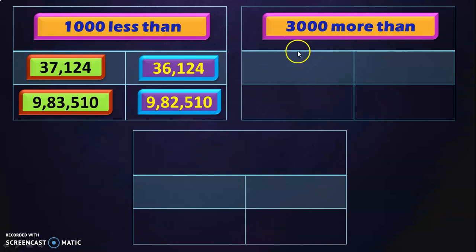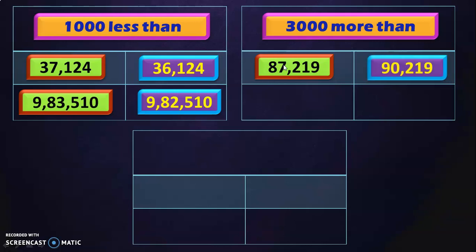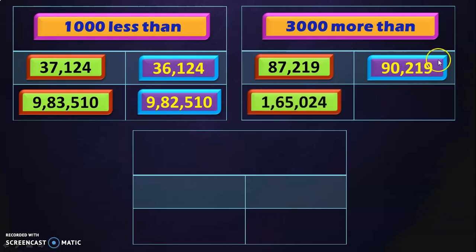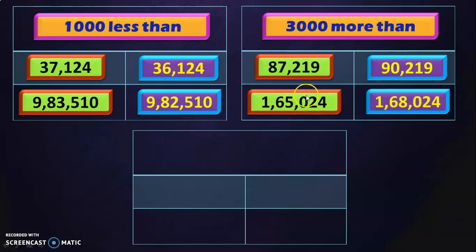This is something new we are seeing in class 4. Now we are going to see 3000 more than a number. You reach for the 1000's place and add 3 to it. So 3000 more than 87,219 is 90,219. The next number is 1,06,5024 — 3000 more than this will be 1,06,8024, because 5 plus 3 is 8.